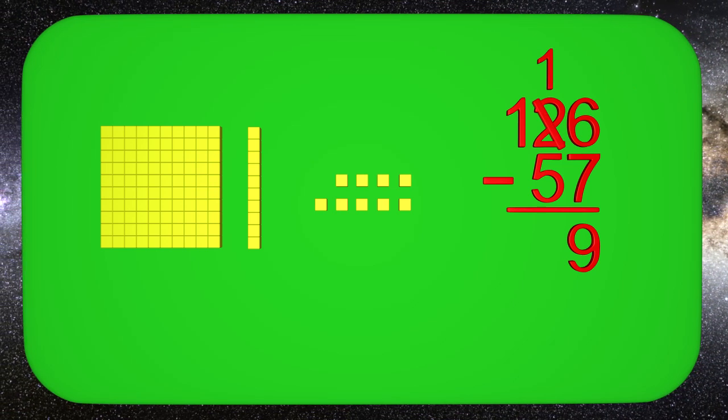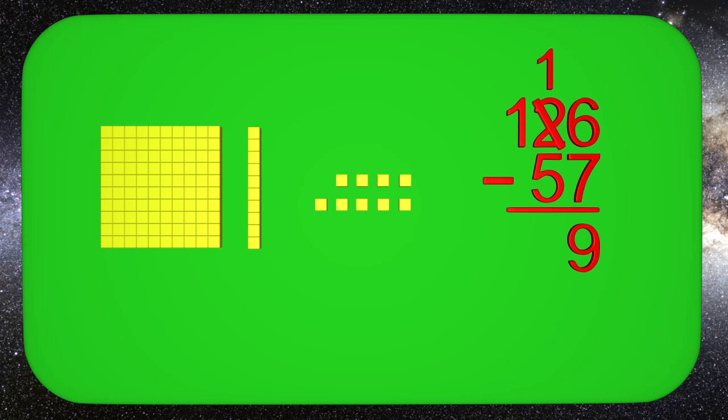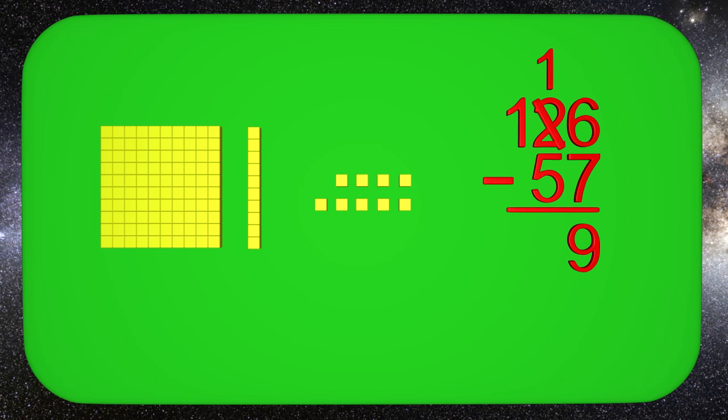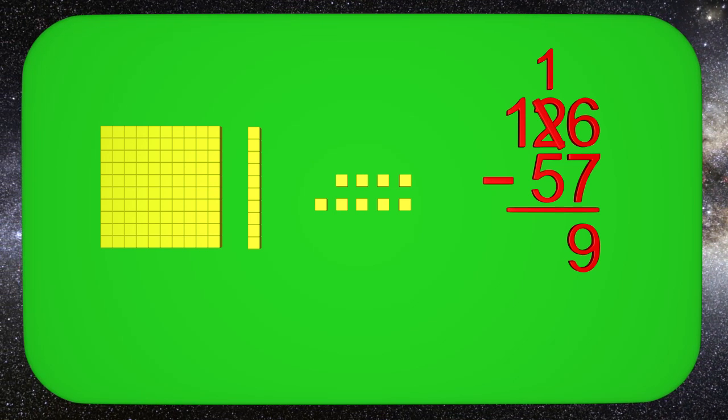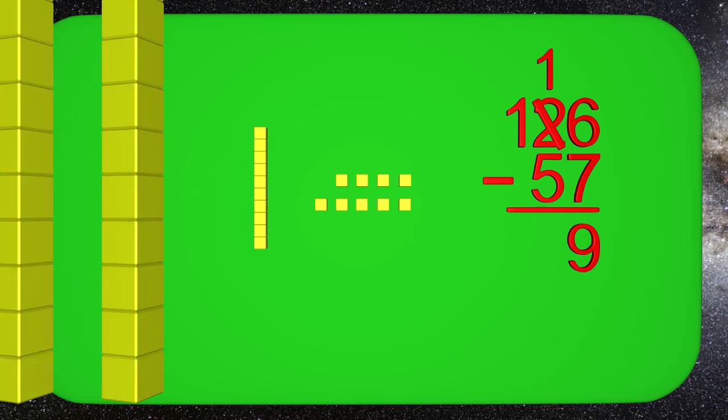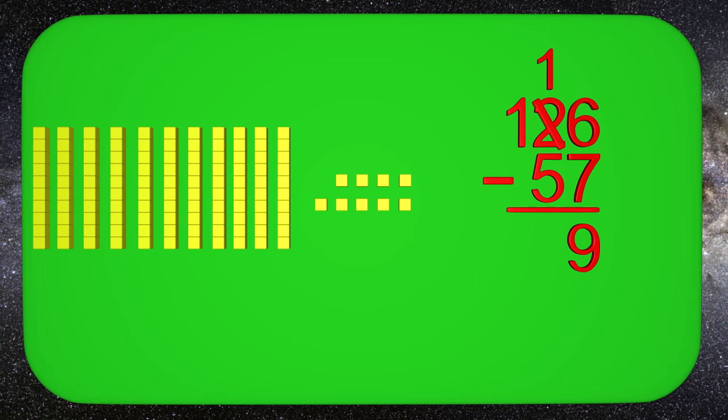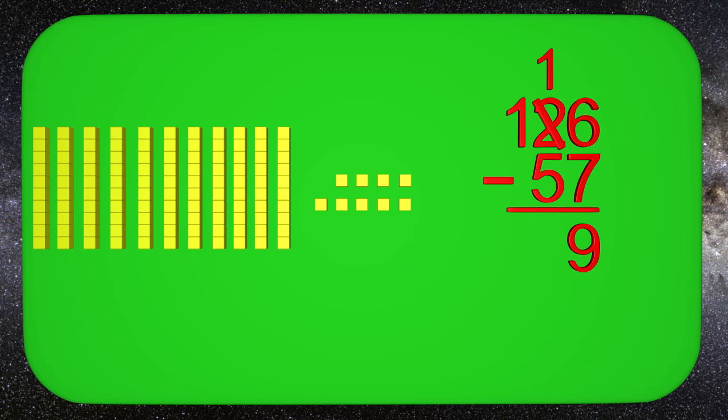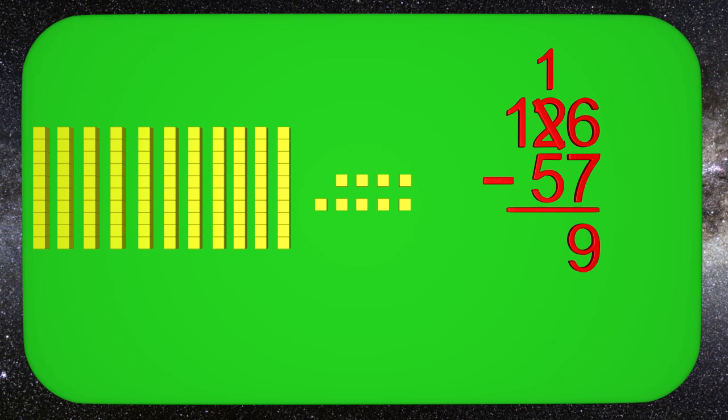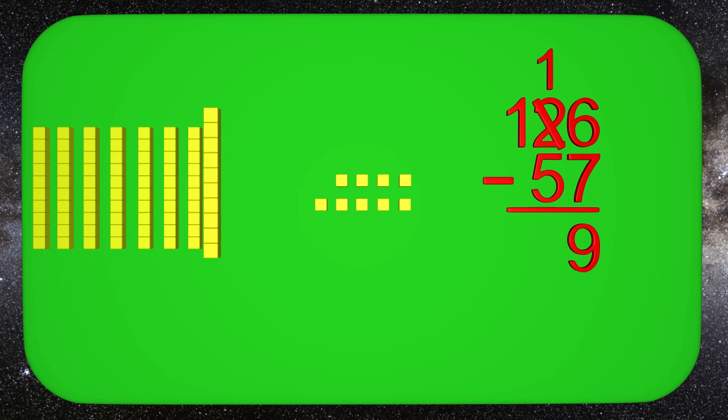We now have one tens block and we need to take away 5 tens, but can we do that? The only way we can do this is if we trade the hundreds block for tens. One hundreds block gives us 10 tens blocks. Can you tell me how many tens blocks we have now? We have 11 and we need to take away 5. So I remove 1, 2, 3, 4, 5.